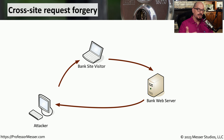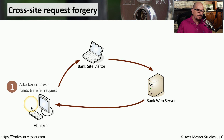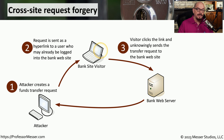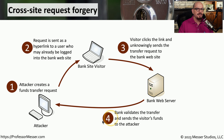Here's an example of how an attacker might take advantage of a cross-site request forgery. In this example, an attacker and a website visitor exist, and the website visitor has already authenticated to the bank's web server. The attacker creates a funds transfer request and gets it to the bank site visitor, perhaps via a hyperlink in an email or a separate message. If the victim is logged into the bank and clicks one of those malicious links, information is sent to the web server that causes the victim's account to transfer money to the attacker's account. This all happens behind the scenes, and the victim may not even realize the transfer has taken place.